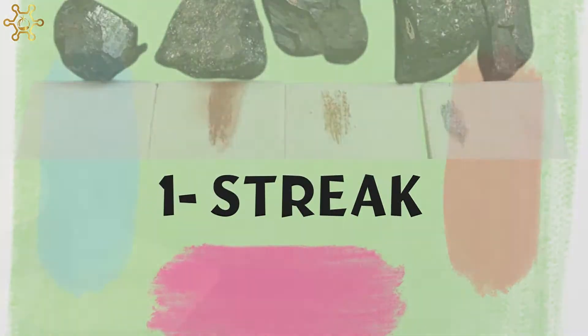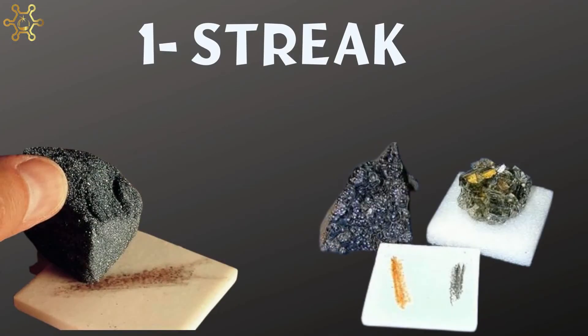Streak: the streak of a mineral is the color of its powder. Although the color of a mineral can vary, its streak does not.